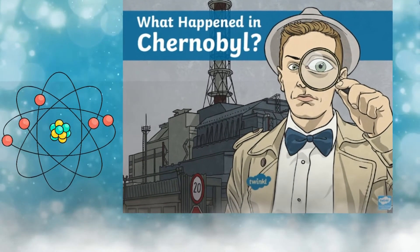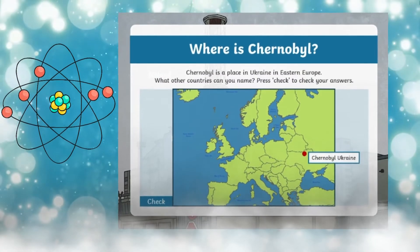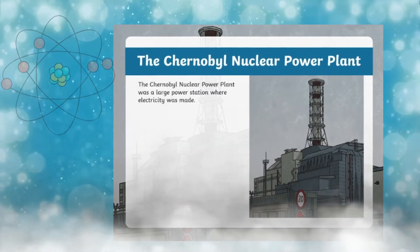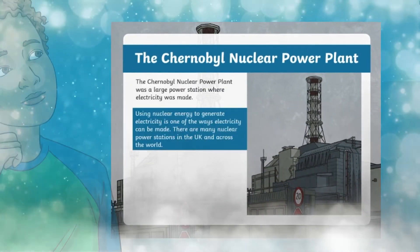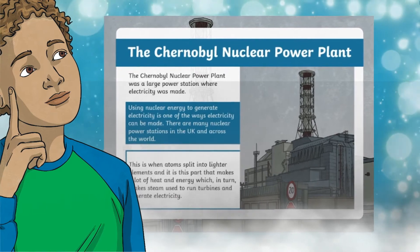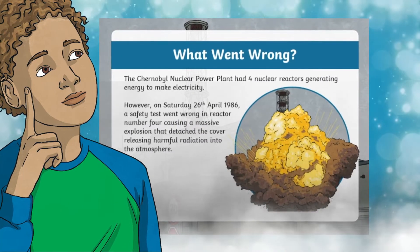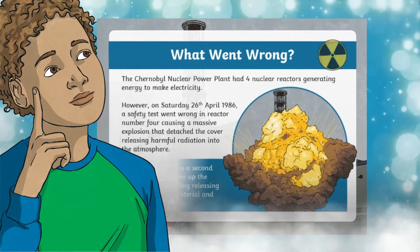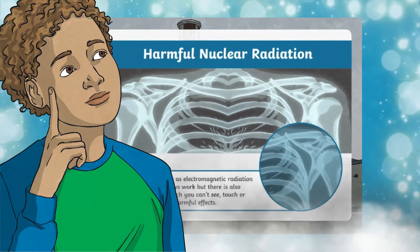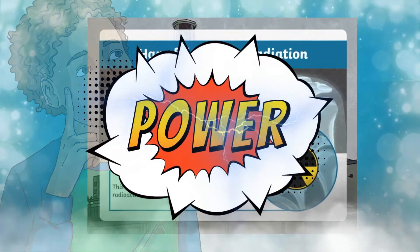Over 30 years later, in a time of climate change and green renewable energy, find out what happened in the timeline of events of this disaster. The Chernobyl nuclear power plant was a large power station where electricity was made, with four nuclear reactors generating energy to make electricity.